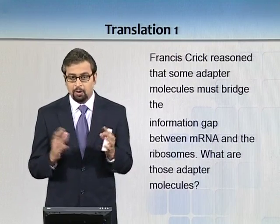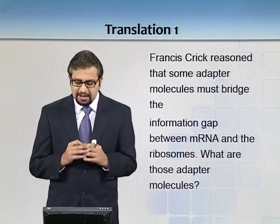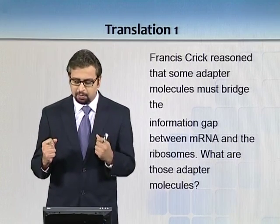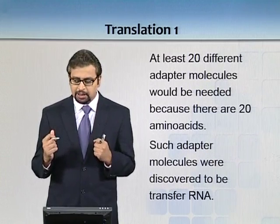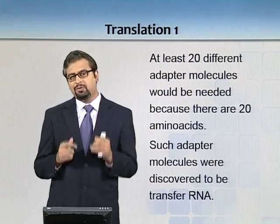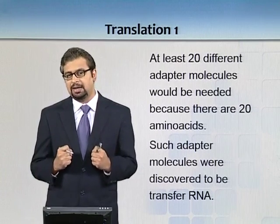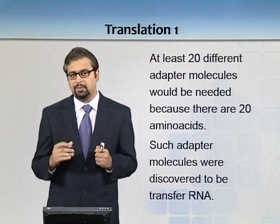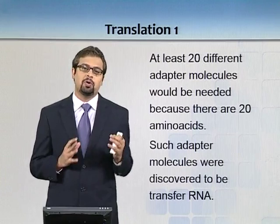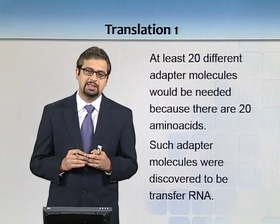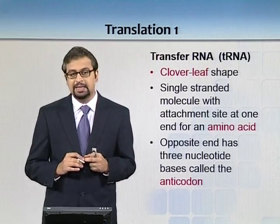Francis Crick, co-discoverer of the structure of DNA, reasoned that there should be some adapter molecules to bridge the information gap between mRNA and ribosomes. We now know those adapter molecules are transfer RNAs. Since there are 20 amino acids, there need to be at least 20 different transfer RNAs. And since there are 64 codons, we need at least 64 anticodons to work with them.